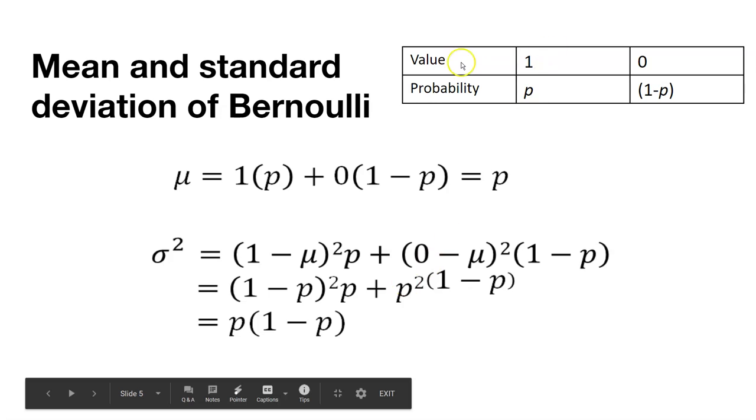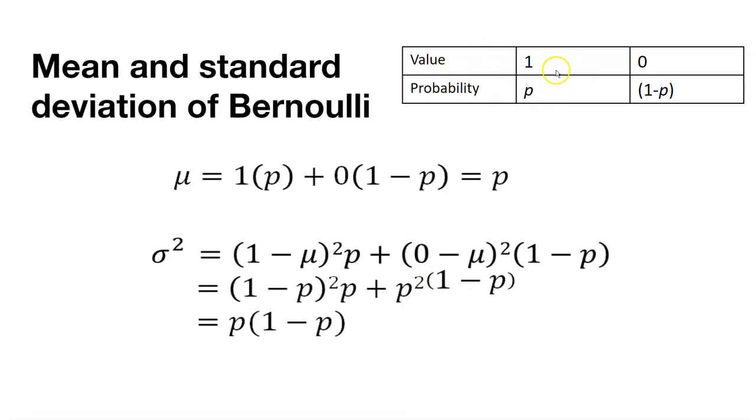You can think about it as in this table: the probability p is when the value is 1, say our tree is alive. The probability (1 minus p) is 0, say when our tree is dead. So we might be able to look at the mean and standard deviation of the Bernoulli through this process.